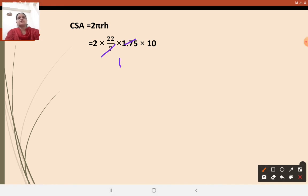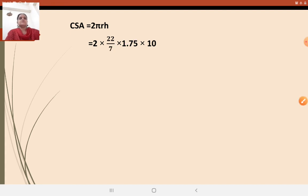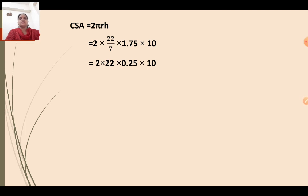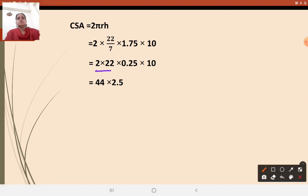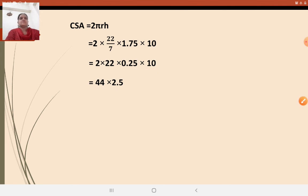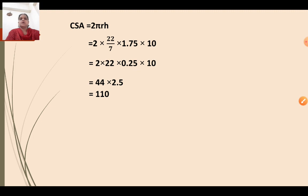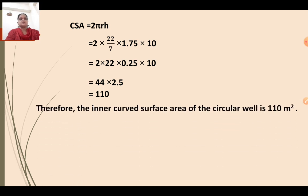After cancellation, 1.75 divided by 7 gives 0.25. So we get 2 into 22 into 0.25 into 10. Now multiply: 2 into 22 equals 44, and 0.25 into 10 equals 2.5. Then 44 into 2.5 equals 110. So the inner curved surface area of the circular well is 110 meter square.